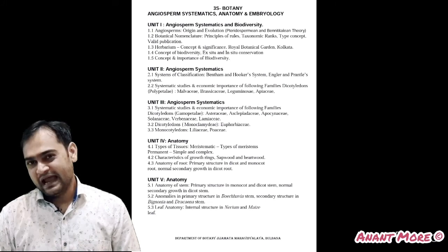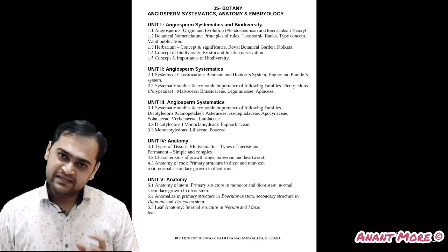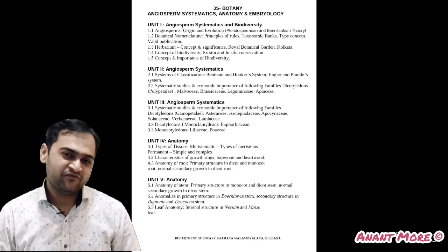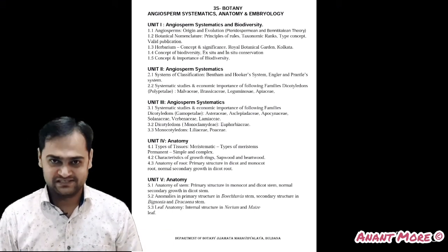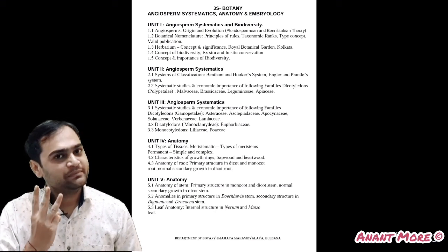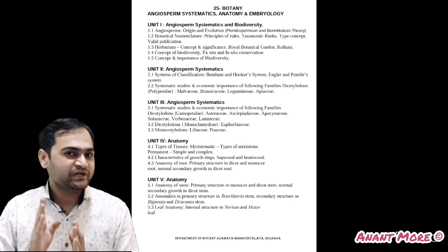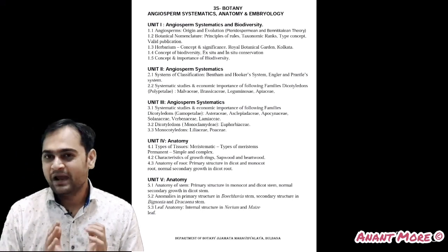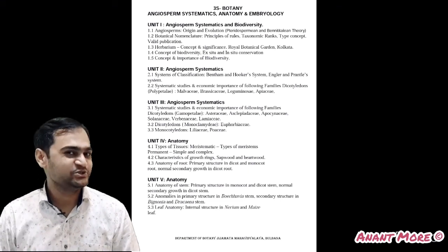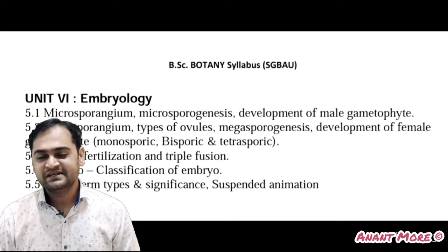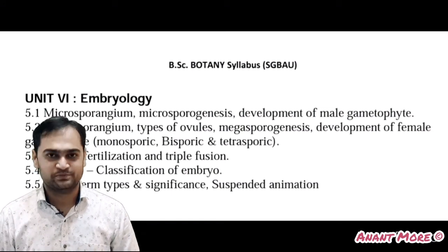The subject is Angiosperm Systematics, Anatomy and Embryology. In this, you will have six units. Unit one is Angiosperm Systematics and Biodiversity. Units two and three cover Angiosperm Systematics. Units four and five cover Plant Anatomy with respect to angiosperms. Unit six covers Embryology, that is embryological developments in angiosperms.